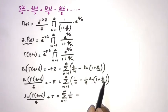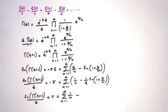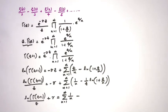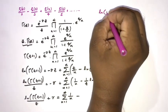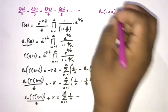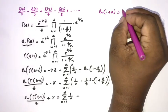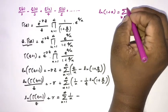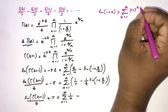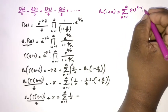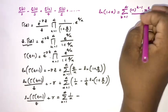Now I am going to use the Taylor series of ln(1 + C/N). We know the Taylor series of ln(1 + x) is equal to the infinite sum from k=1 to infinity of (−1)^(k−1) · x^k / k.